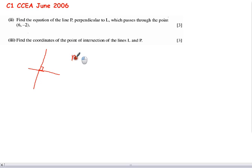they multiply to give minus 1. So our value of the gradient of L is negative 2. So n is equal to negative 1 divided by negative 2, which is a half. Or another way you can think of it is what number multiplies by negative 2 to give negative 1? Well, a half.